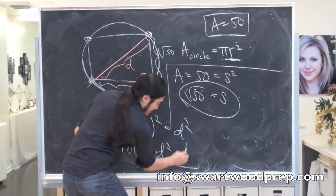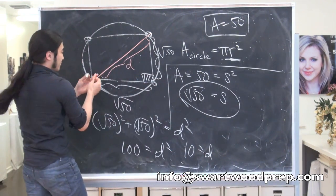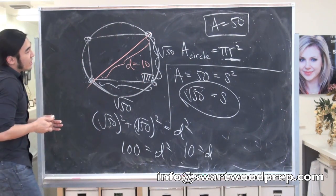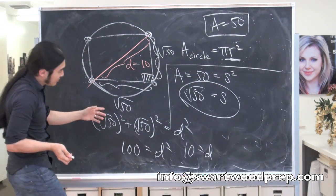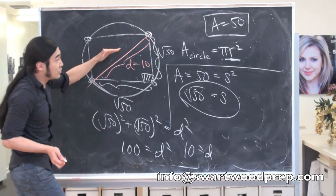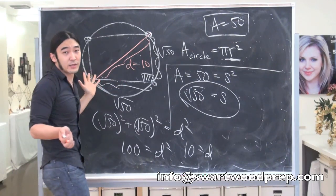So that's 100 is equal to d squared. And then it's really pretty, because then 10 is equal to d. Again, a lot of shortcuts here. You could have used the whole, like, this guy is root 2 times the length of this side. Then you would have gotten root of 100, which is also 10. Any shortcuts are fine.